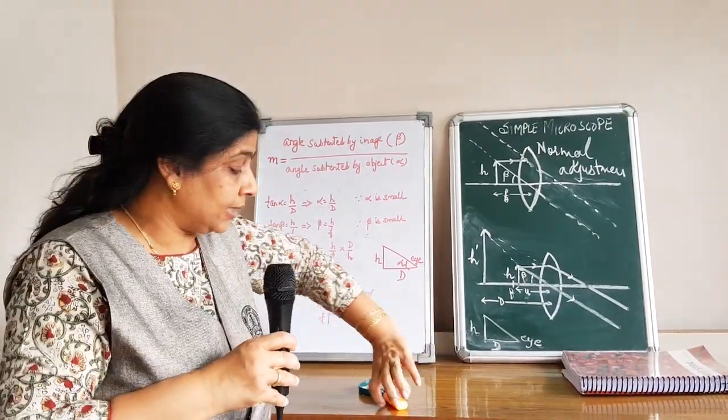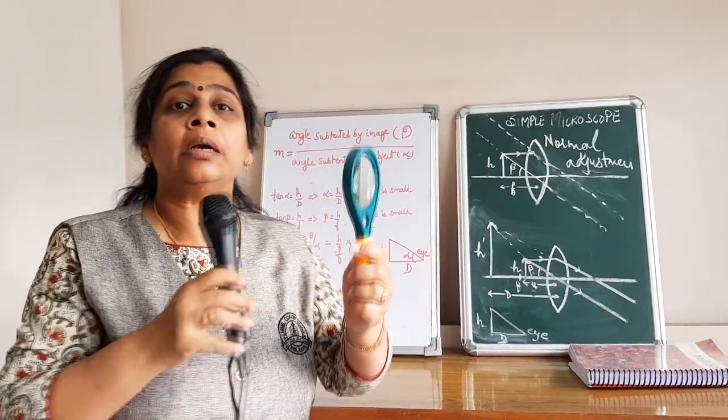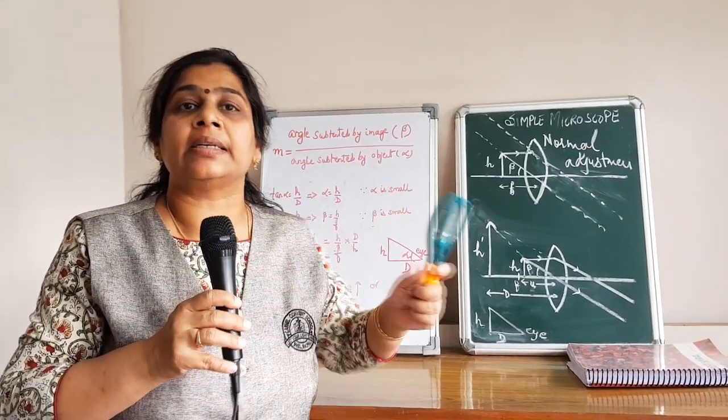A magnifying glass consists of a single converging lens, that is a single convex lens.